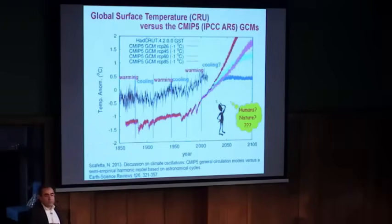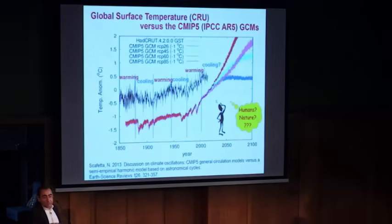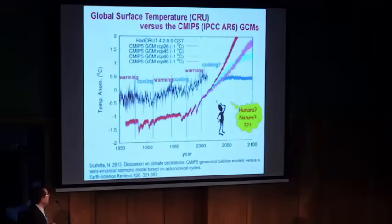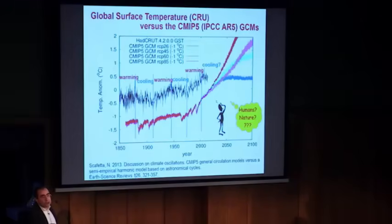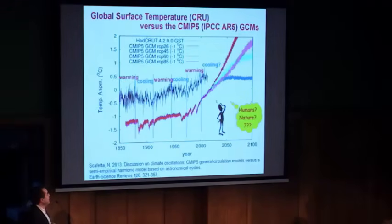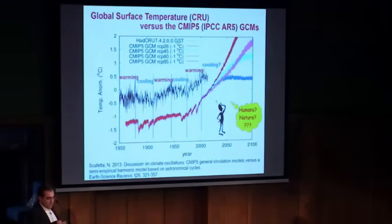What is the origin of this oscillation? Because if the models do not reproduce the natural oscillation of the climate, it might happen that the models are missing something very, very important for interpreting climate change.